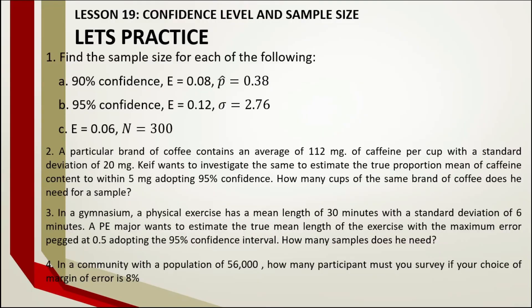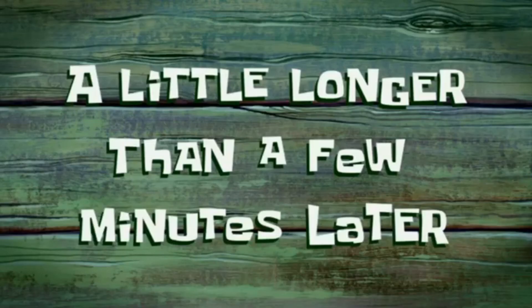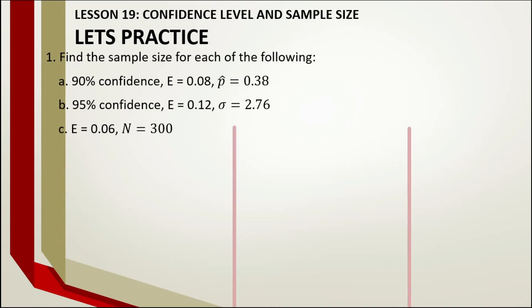Get ready for practice problems. Pause the video, read the problems carefully, then check your answers afterward. For the first practice problem, the given includes P-hat, so we use the population proportion formula. P-hat is 0.38, so Q-hat equals 1 minus 0.38, which is 0.62.